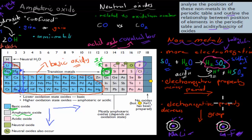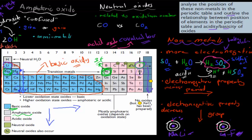Electronegativity increases across the period, so fluorine is more electronegative than lithium. Electronegativity also decreases down the group, so fluorine is more electronegative than iodine. The reason is that a smaller element is more eager to grab that one electron to complete its shell, while a bigger element is a bit more satisfied. Therefore fluorine makes more acidic oxides than iodine.